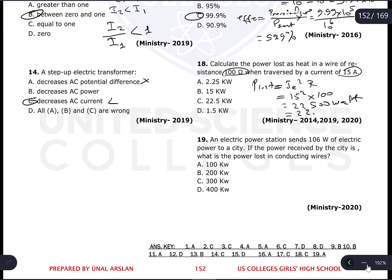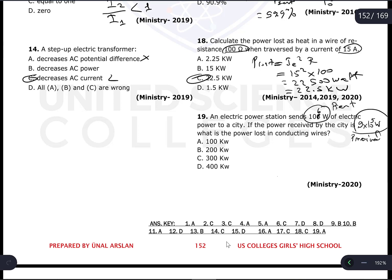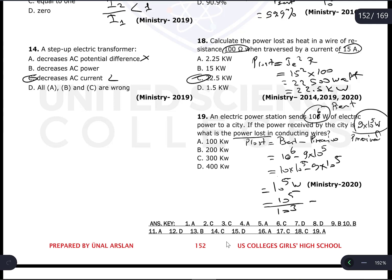Question 19: An electric power station sends 10⁶ watts (power sent). The power received is 9 × 10⁵ watts. What is the power lost? Power lost = power sent − power received = 10 × 10⁵ − 9 × 10⁵ = 1 × 10⁵ watts = 100,000 watts. Dividing by 1000 gives 100 kilowatts. The correct answer is A.